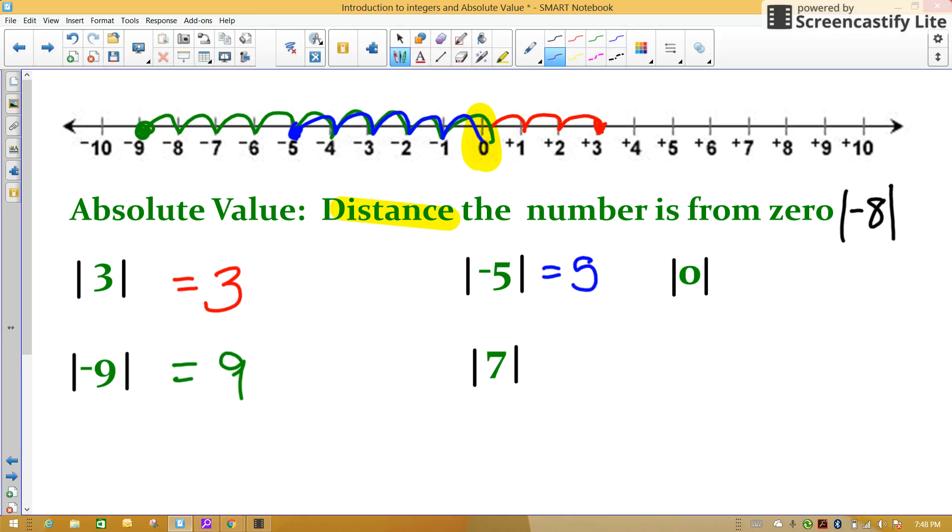Find 7 on your number line. How many spaces from zero is positive 7? 1, 2, 3, 4, 5, 6, 7.